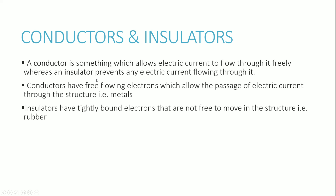The first thing we'll do is talk about conductors and insulators. A conductor is something that allows electric current to flow through it freely. The reason why conductors allow electric current to flow so easily is because they have free-flowing electrons. Metals, for example, are really good conductors because, as you'd know from chemistry, metals have free electrons throughout the structure — metallic bonding.